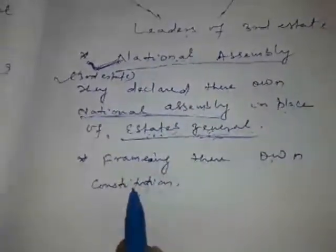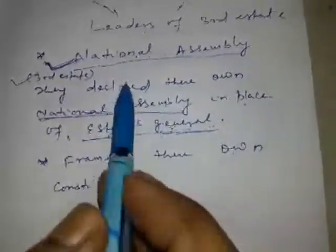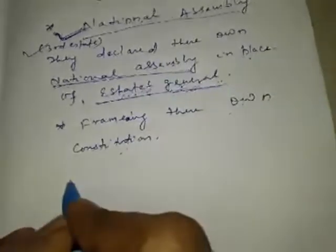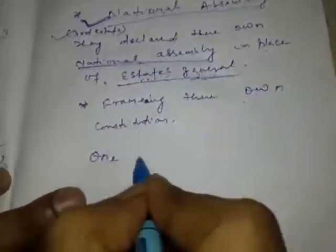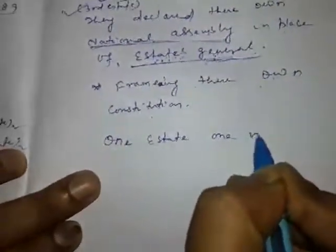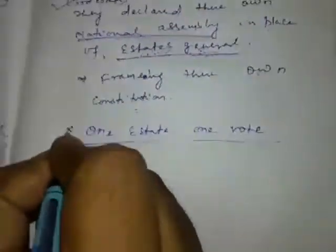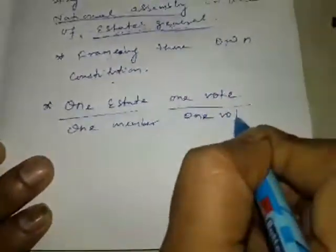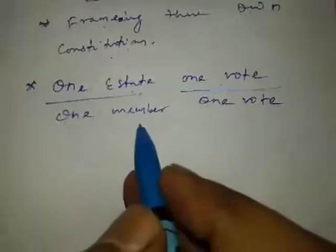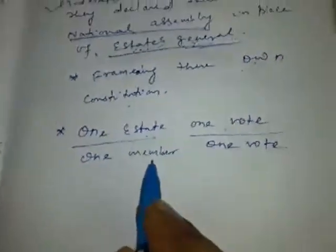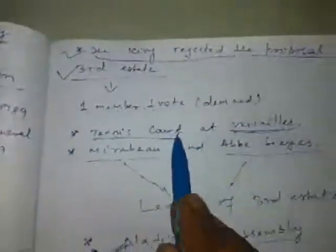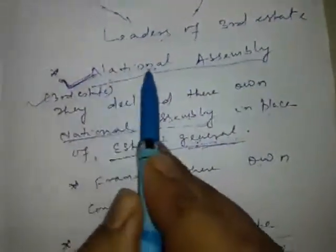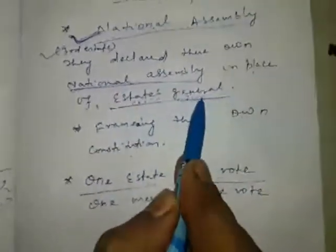To recap: the Third Estate was not ready to accept one state, one vote. They demanded one member, one vote. The king rejected the proposal. So they walked out from the Estates General, assembled in a tennis court at Versailles under the leadership of Mirabeau and Abbé Sieyès, declared their own National Assembly in place of the Estates General, and started framing their own constitution.